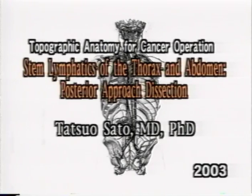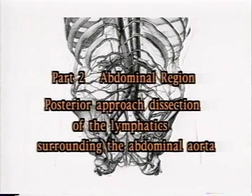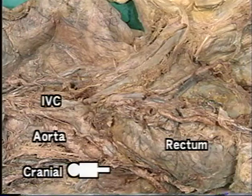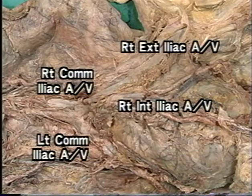In this video, from the posterior approach, we cut the abdominal aorta and dissect the lymphatics surrounding it to view their relationships with the autonomic nerves. First, we will dissect lymphatics along the iliac vessels of the right side to view the lymphatic pathways and their manner of connection.